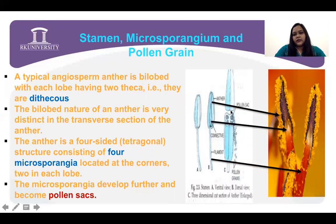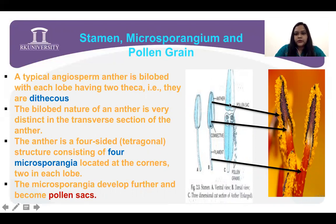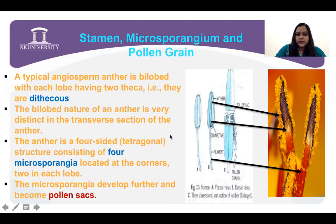We took a transverse section and in further detail we will study what microsporangium is and what the pollen grain is. A typical angiosperm anther is bilobed — it has two thecae compartments. Into those two thecae, there are four chambers — a tetrahedral arrangement.